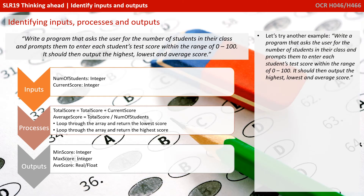So we've got here that we should input the number of students, and obviously each student's score will need to be input. The output, literally from the scenario, should be the smallest score (min score), the max score, and the average. And then obviously there's some processing in the middle to work out those values — that's where your algorithm or your code would go.